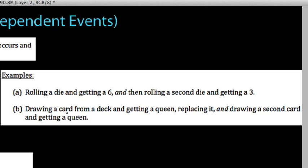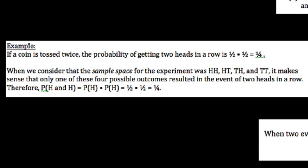Or drawing a card from a deck and getting a queen, putting it back into the deck and then drawing a second card and getting a queen. These two events would also be classified as independent and the key words there being replacing it. We do with and without replacement. So we're going to take a look at an example involving a coin and tossing it twice.